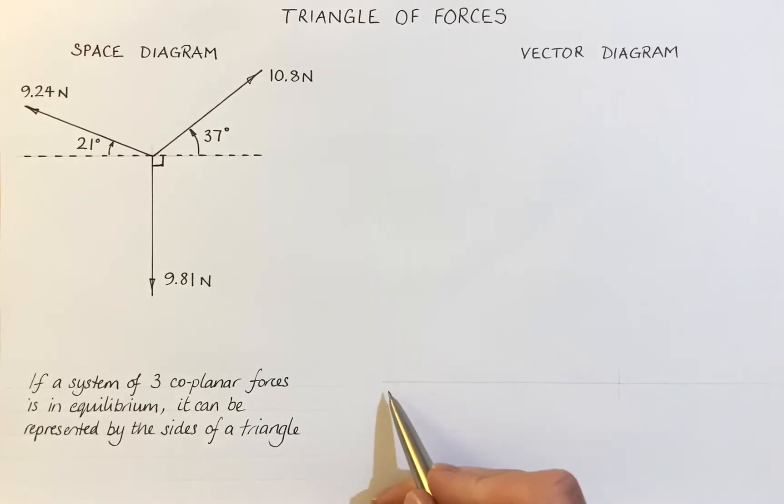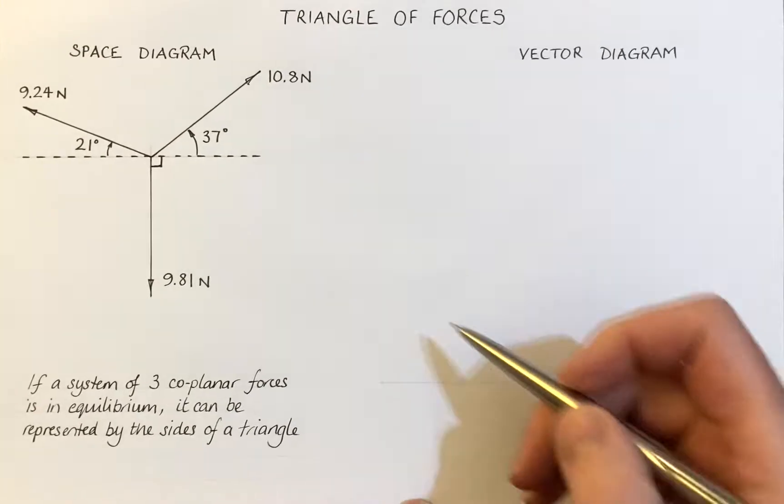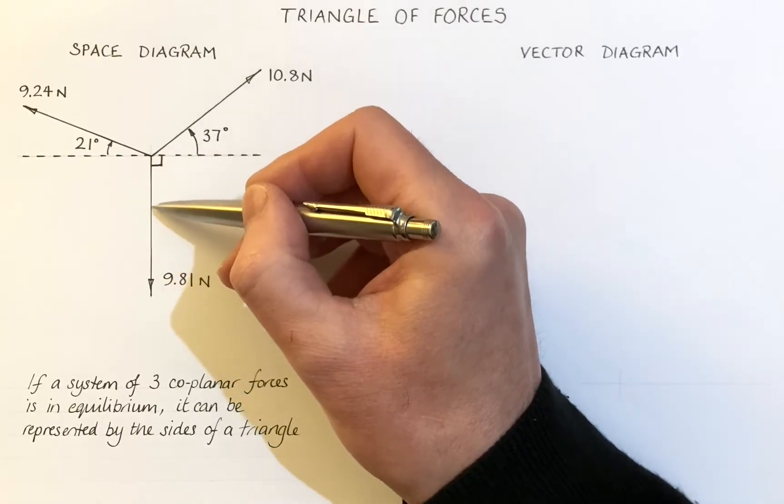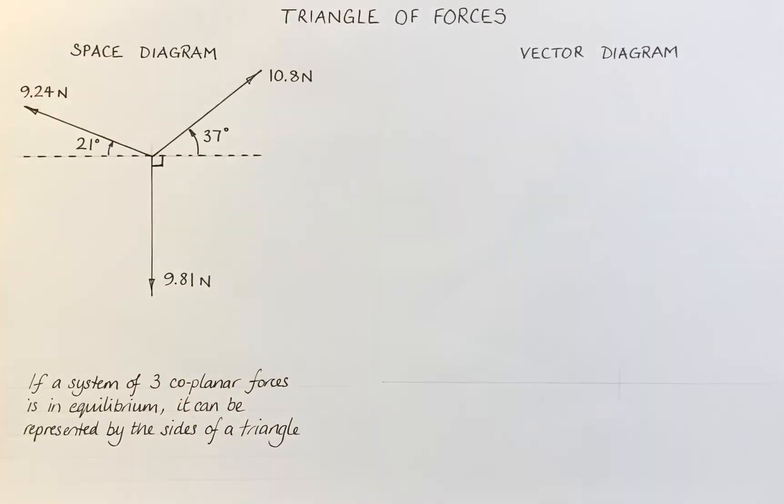First we draw a horizontal line with a starting point and then we're going to draw our first vector. Our first vector is going to be this one here, 9.81 newtons acting straight down.